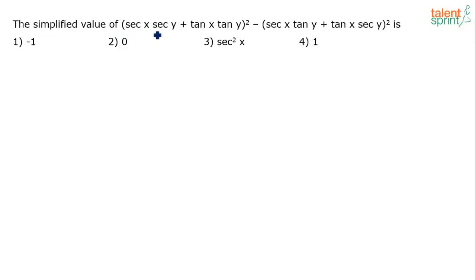The simplified value of (sec x sec y + tan x tan y)² − (sec x tan y + tan x sec y)² is: Options given are -1, 0, sec²x, or 1.